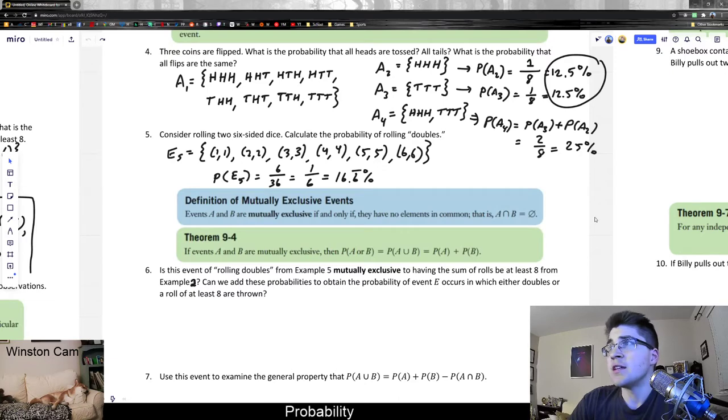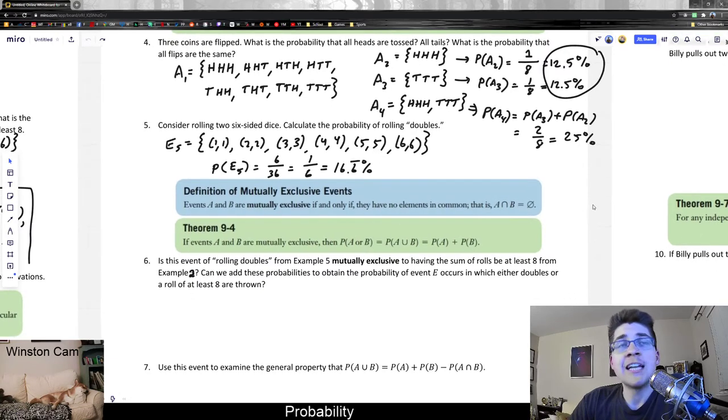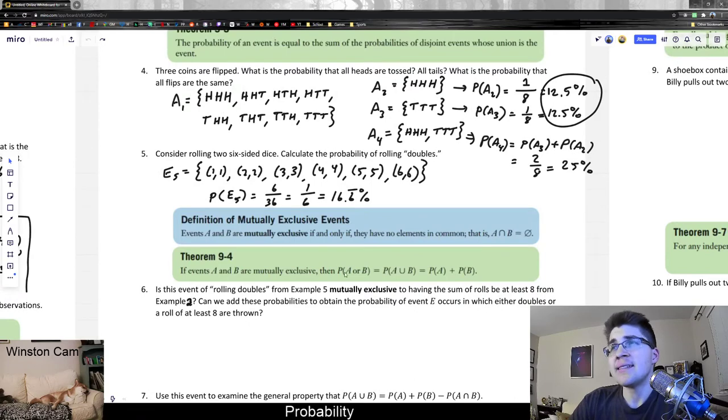So this is relevant for theorem 9-4, which says that if events A and B are mutually exclusive, then the probability of A or B is equal to the probability of the union of A and B, which is equal to the probability of the sums of those separately. And really, this is just another way of doing exactly what we did in the last video.